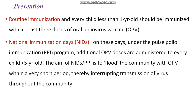The next modality is National Immunization Days. Under the Pulse Polio Immunization Program, additional OPV doses are administered to every child who is less than five years of age. The aim of National Immunization Day is to flood the community with OPV within a very short period, thereby interrupting the transmission of the virus throughout the community. OPV doses are given irrespective of the immunization schedule to all children under five years of age.